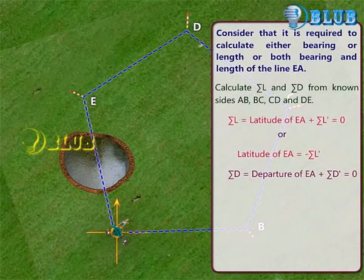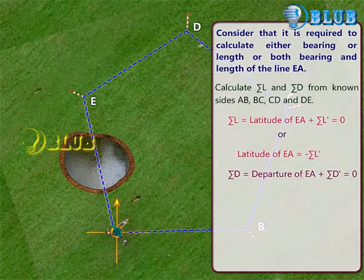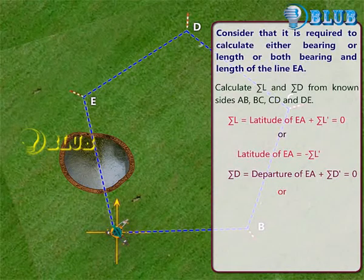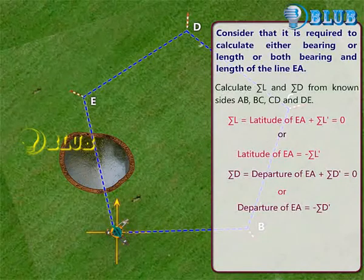Summation D is equal to departure of EA plus summation D dash is equal to 0, or departure of EA is equal to minus summation D dash.